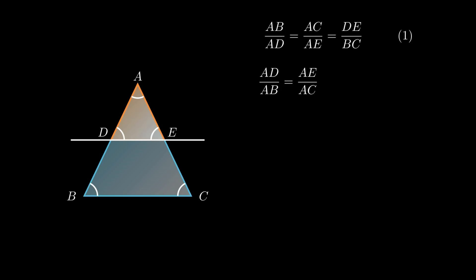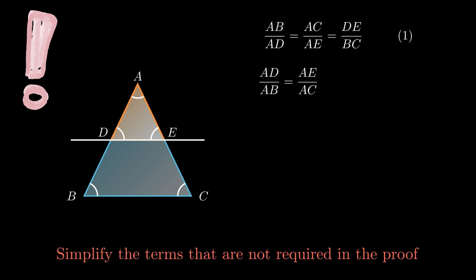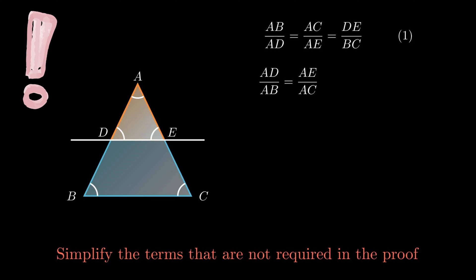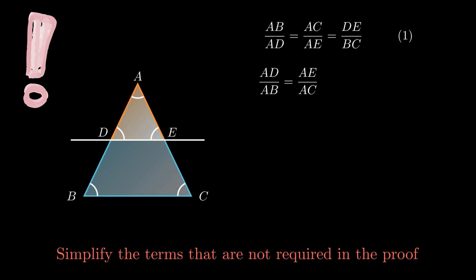In case the ratio of corresponding sides are written as AD upon AB and AE upon AC, then one must take care to simplify the terms that are not required in the proof. Since side AB and side AC are not required in the proof, simplify these terms to get side BD and side EC respectively. To simplify unnecessary terms, just make sure that these terms are written in the numerator.